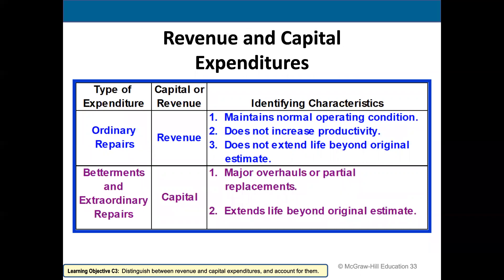What's hard about this in a real-life scenario is some things are clearly revenue expenditures and some things are clearly capital expenditures, but there's always a gray area where you have to think about it and discuss with the people who make those decisions. Here are some identifying characteristics: revenue expenditures maintain the normal operating condition, do not increase productivity, and do not extend the life beyond the original estimate.